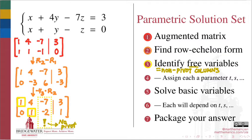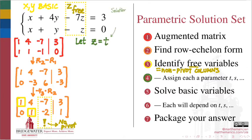Then, referring to your original system for the variable names, assign each of the free variables a parameter name, such as t or s. The value of this free parameter can be chosen to be any real number, and you will still have a solution to your system.